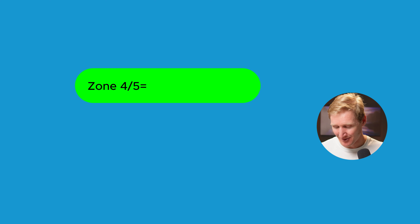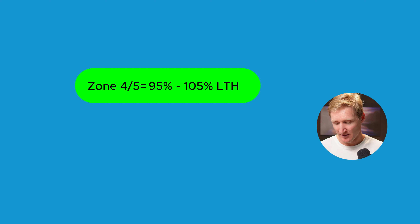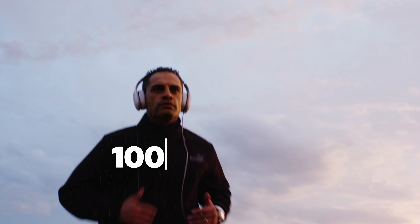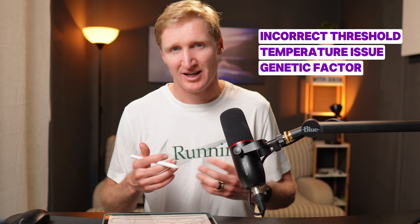Now we have the Zone 4/5 threshold intervals. I set 95 to 105 percent of threshold for pace and power outputs. I use a wide band rather than a narrow zone because I've seen huge inter-individual variability — some runners can easily run over an hour at 100 to 105 percent, while others can barely last 45 minutes at just under 98 percent. Whether that's threshold set incorrectly, temperature, or genetics, it's probably all of the above.